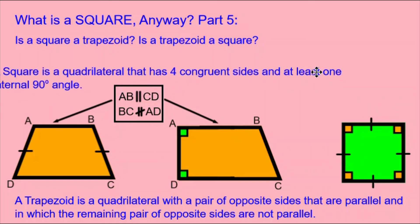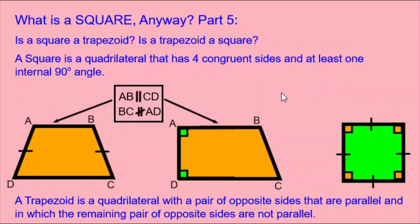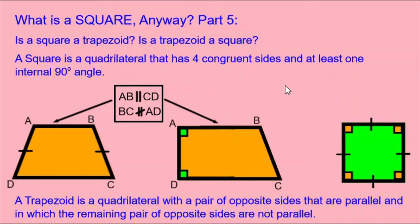Is a trapezoid a square? Let's look at the definition of a square: a quadrilateral that has four congruent sides and at least one internal 90-degree angle. The right trapezoid has two internal 90-degree angles, but it will not have four congruent sides — that's impossible, because sides BC and AD are not parallel, which forces them to not be congruent. In the isosceles trapezoid, it has two congruent sides, but the other two sides cannot be congruent. Therefore, a square is not a trapezoid, and a trapezoid is not a square.